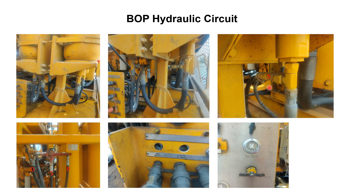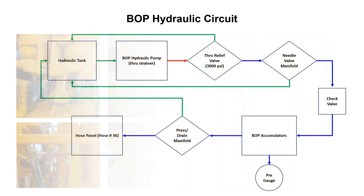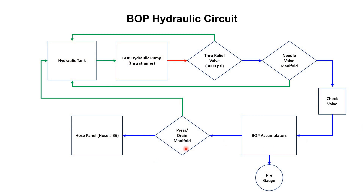From the fourth accumulator, with the help of a T-fitting, flow goes to this manifold — the pressure and drain manifold. When this knob is on the pressure side, pressure will be given at the hose panel on hose number 36. When it is on the drain side, all the pressure will be drained back to the tank. When we close the needle valve, pressure comes to the accumulators and provides pressure at hose number 36, on which it is written 'BOP supply'. With the help of this pressure and drain manifold we can control pressure towards hose panel number 36 or towards the hydraulic tank.